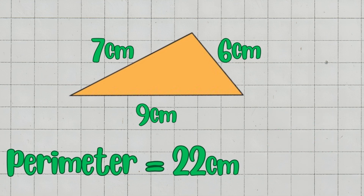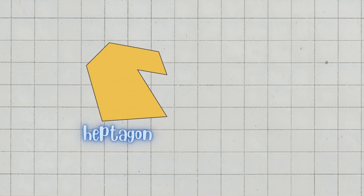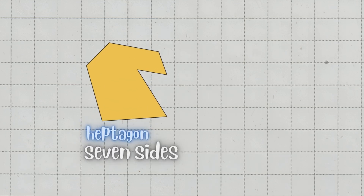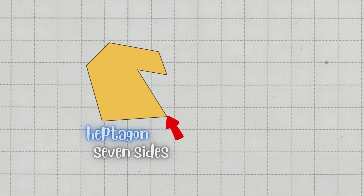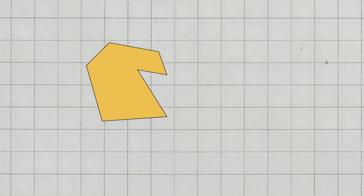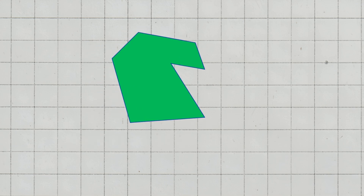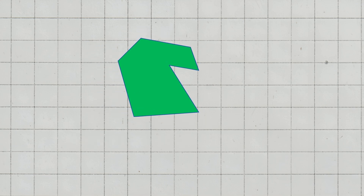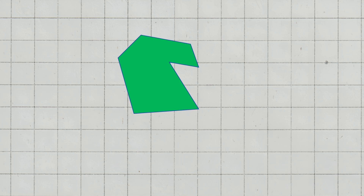That is cool. Let's look at another example. A heptagon is a shape with seven sides. If all the sides are not equal, we call it an irregular heptagon, meaning each side can have a different length. Here is an example of that. Let's say we have an irregular heptagon with the following side lengths.